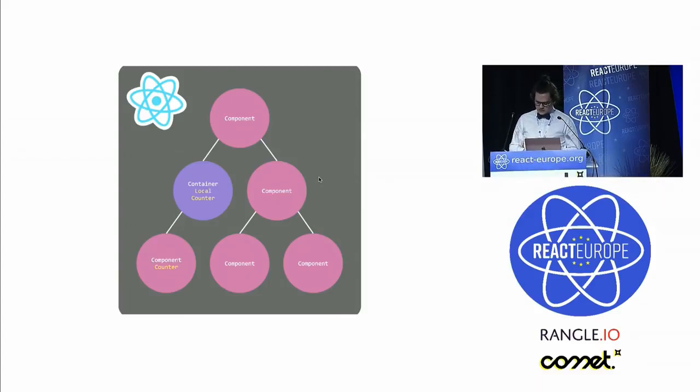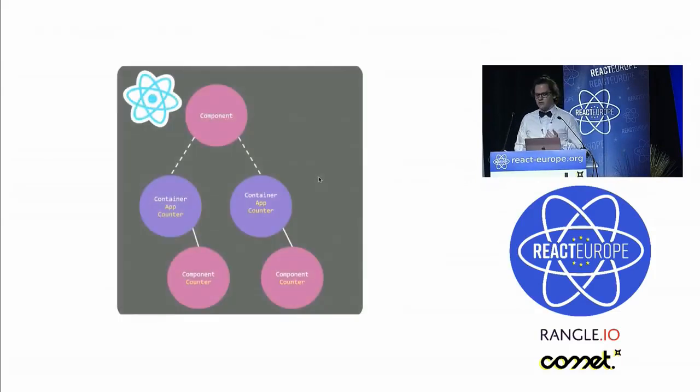But as the application grows, we have components like a counter app that we want to share across the application, and we want to share the same state. So we need something like a model container to share that state. That's where we usually introduce Redux. But why Redux? Because Redux has all these good qualities that we want to exploit. As the documentation states—it's literally taken from the Redux landing page—